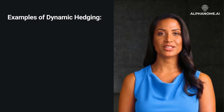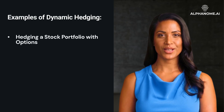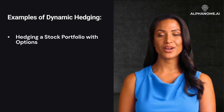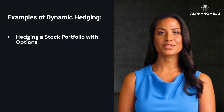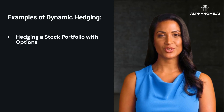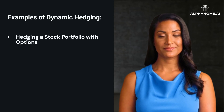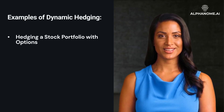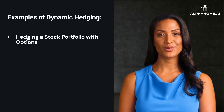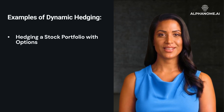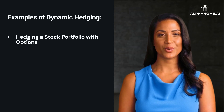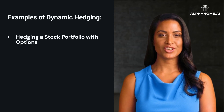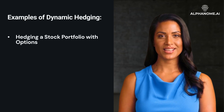Example 1: Hedging a stock portfolio with options. Situation: an investor holds a significant position in a tech stock that is highly volatile. Strategy: to hedge, the investor buys put options on the same stock. If the stock price falls, the gain on the put options offsets the loss on the stock. Adjustment: as the stock price fluctuates, the investor adjusts the number of put options to maintain the hedge.